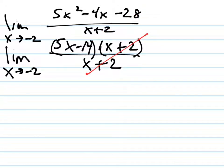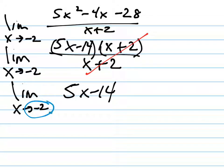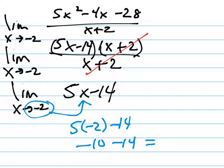Cancellation, giving me this. I no longer have a problem plugging in negative 2 to do direct substitution, so I'm going to try that. 5 times negative 2 minus 14 is negative 10 minus 14, which is negative 24, the answer.